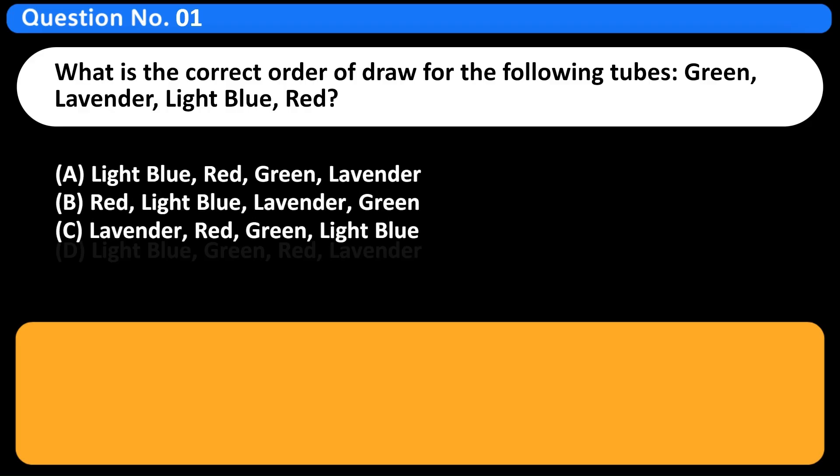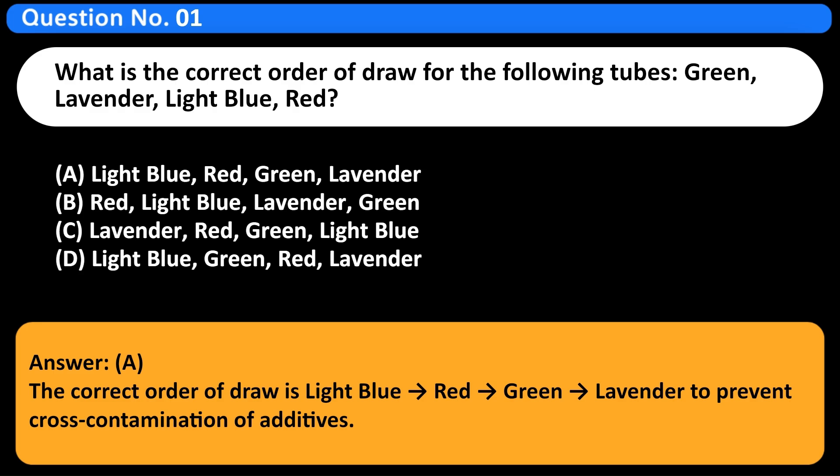What is the correct order of draw for the following tubes: Green, lavender, light blue, red? A. Light blue, red, green, lavender. B. Red, light blue, lavender, green. C. Lavender, red, green, light blue. D. Light blue, green, red, lavender. Answer A. The correct order of draw is light blue, red, green, lavender to prevent cross-contamination of additives.